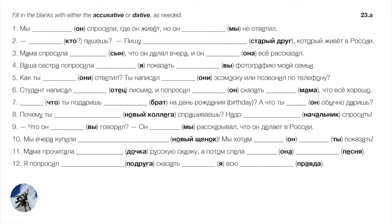Number six: Студент написал письмо — the student wrote a letter, and we have father, отец. We have everything but an indirect object, so dative makes sense: Студент написал отцу письмо. He wrote to father a letter and asked him to tell mom that everything is good. Попросил — we're making a request, so accusative: Попросил его. Then сказать маме — a verb of speaking takes a dative indirect object: Он попросил его сказать маме, что всё хорошо.